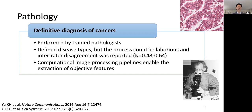Pathology evaluation, as many of you know, provides the definitive diagnosis of cancers. This needs to be performed by trained pathologists, where they acquire the sample, make the sample into thin microscopic slides, stain them with appropriate chemicals, and observe them on the microscope. This process has helped us define disease types, but the process can be pretty laborious because it's a purely manual process, and in some cases, inter-rater disagreement has also been reported.